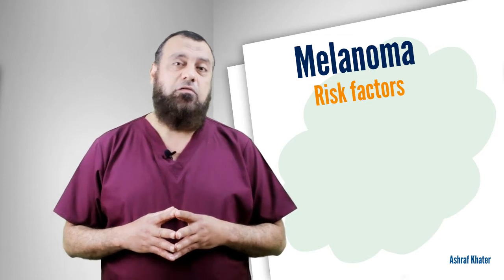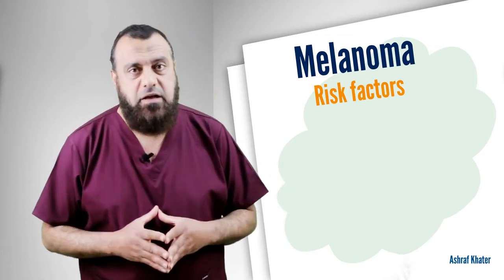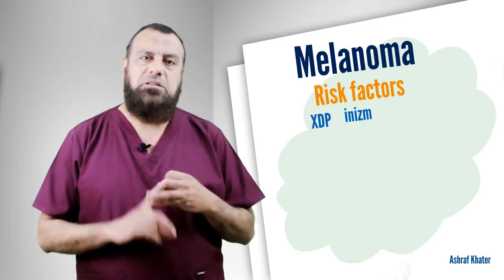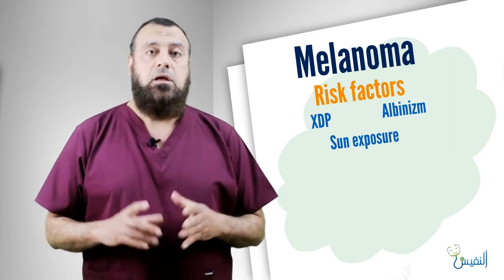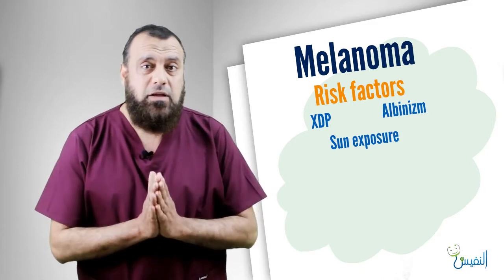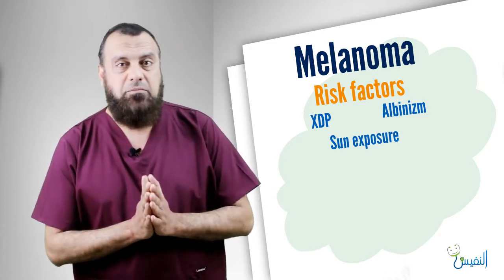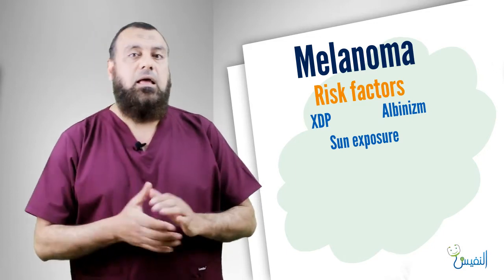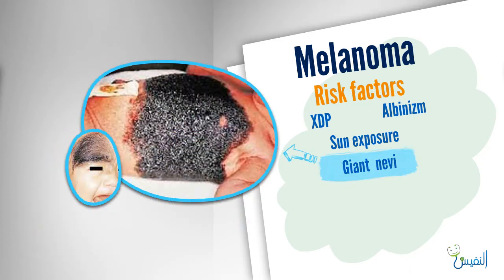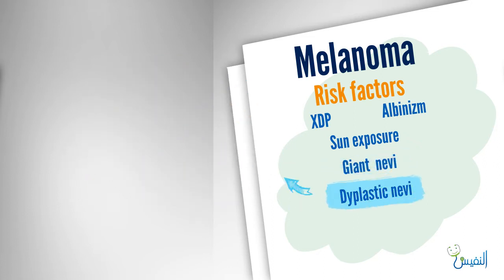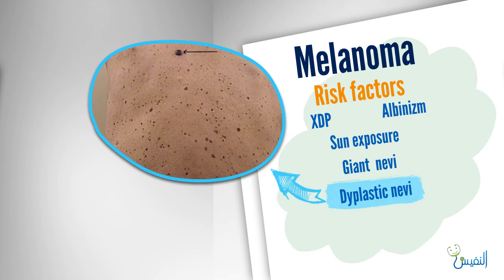Speaking about the risk factors of melanoma: the general risk factors include xeroderma pigmentosa, albinism and fair skin, and sun exposure. Special risk factors for melanoma are nevi present in the sole or in the palm, and giant nevi. Giant nevi is a nevus occupying a large area of the skin, as seen in this photo. These are dangerous for developing melanoma.